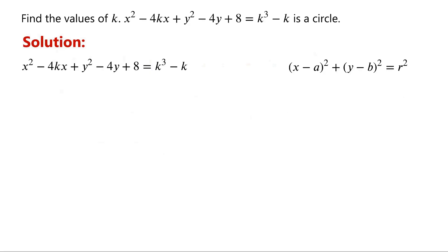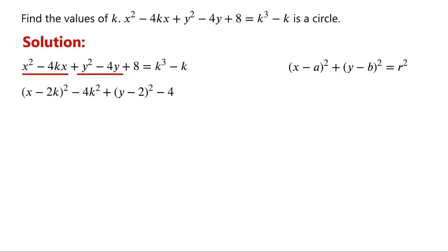Let's complete the square for the terms with x and the terms with y. x squared minus 4kx can be written as x minus 2k all squared, minus 4k squared. y squared minus 4y can be written as y minus 2 all squared, minus 4. Then plus 8 equals k cubed minus k.